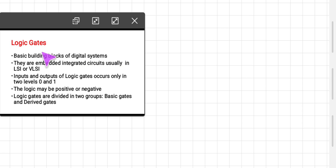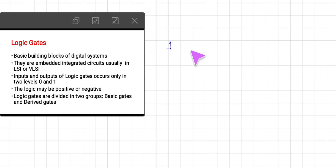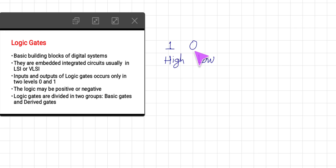Logic gates are the basic building blocks of digital systems. In binary number system or digital system, we have two types of signals: one and zero. One is called the high state and zero is called the low state. Using these two inputs, a particular circuit gives a specific output — and that is basically a logic gate.